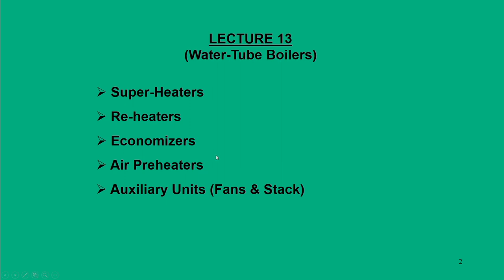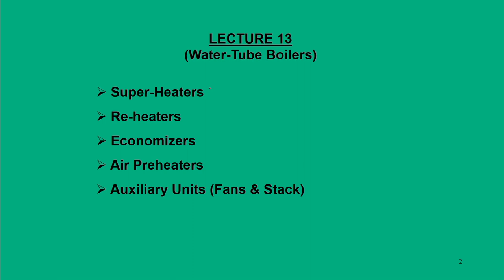Apart from that there are auxiliary units like fans and stacks. In our previous lectures we mostly covered the important component that is the superheater. In this lecture we will focus our attention on some other heat exchangers which are part of this modern steam generator system — they are reheaters, economizers, and air preheaters.